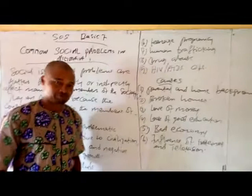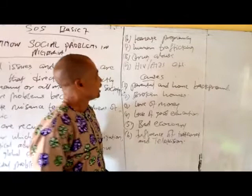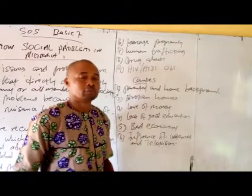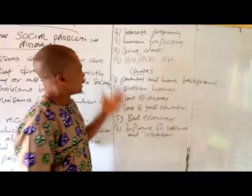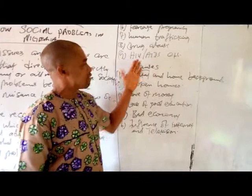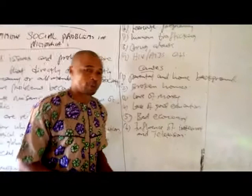We also have human trafficking — that is taking young people abroad or from one village to a city for exploitative purposes. Then we have drug abuse and HIV through AIDS. These are some of the social problems that are around us today.